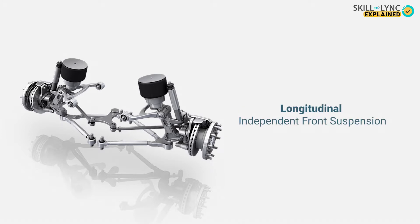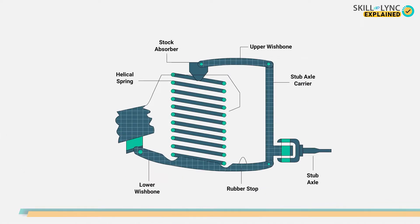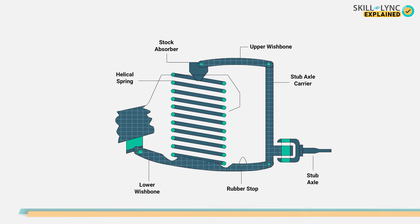Let's start with the longitudinal independent front suspension. Here a helical spring is used and is connected between the U-shaped wishbone. The inner end of the upper wishbone is connected to the hydraulic damper and the outer end is hinged to the stub axle carrier. The lower wishbone is provided with enough length which provides a constant track even when the wheels lift.